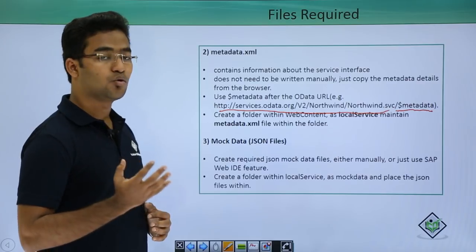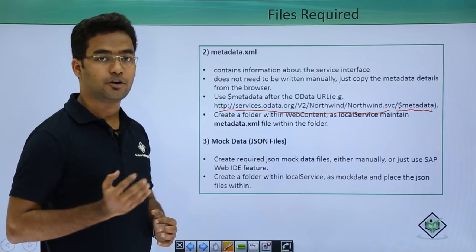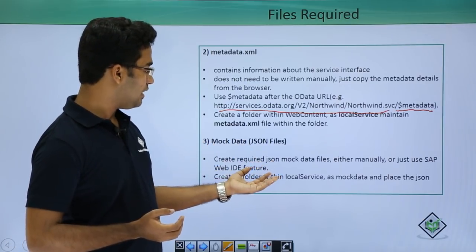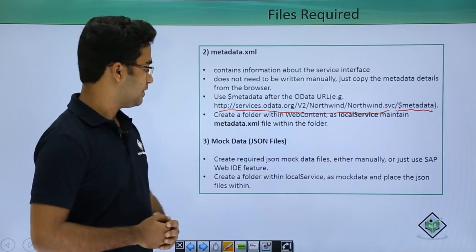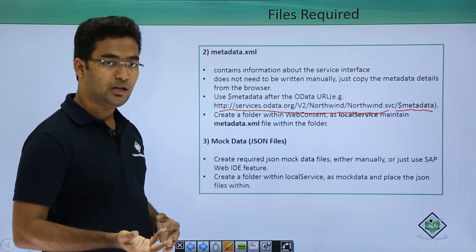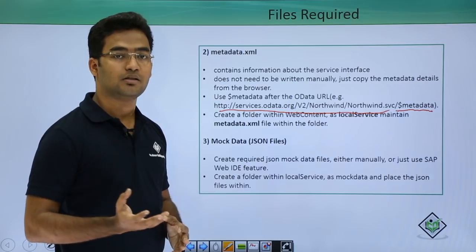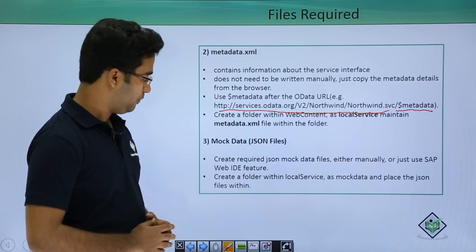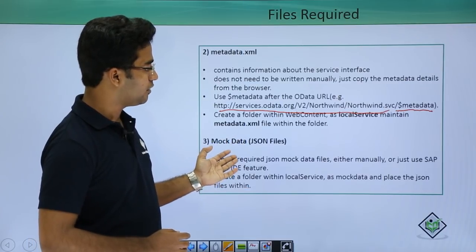We create a local service folder and within this local service folder we place our metadata dot xml file. The third file required is mock data. We place our JSON files in the mock data folder, and this mock data folder is placed in the local service folder. We create JSON mock data files either manually or use the SAP Web IDE feature, which can generate this mock data automatically.